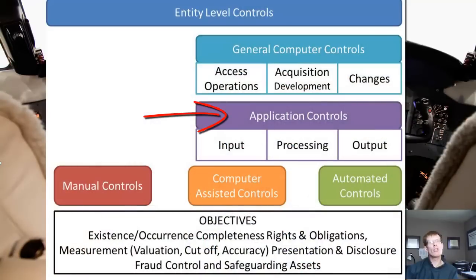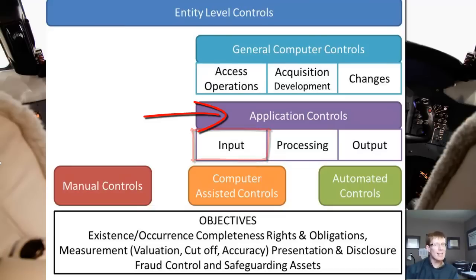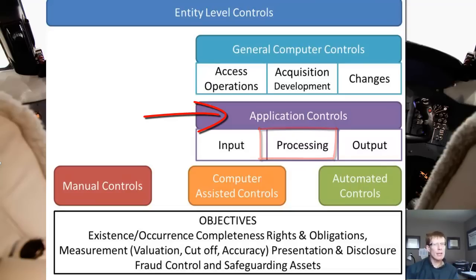Application controls are designed to achieve three objectives. First, that the information input into the system is correct, such as the example I just provided. Second, that the application control ensures that the information is processed correctly by the system. And thirdly, that the application control ensures that the outputs from the system are correct.